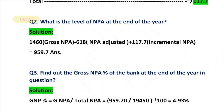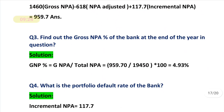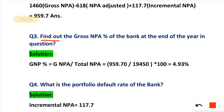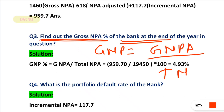For Question 3 — gross NPA percentage at the end of the year: the formula is simply gross NPA divided by total exposure of the bank.